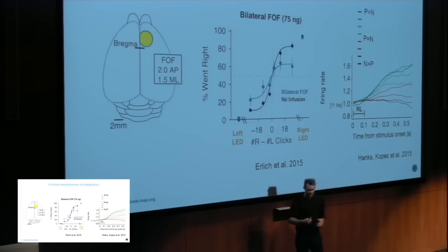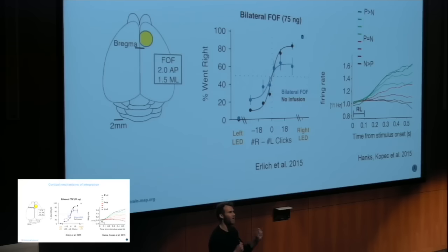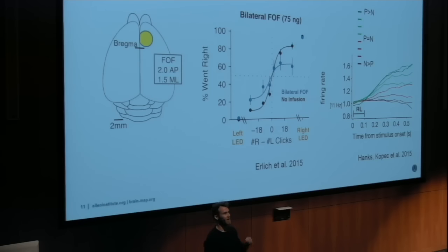We're left with a pretty interesting scenario: neural activity in FOF is necessary for integration, and neurons in FOF are tracking and integrating these clicks across the population. The real question we want to address is: what is the mechanism? How exactly are they doing this? Somehow the nervous system has a way of propagating early sensory information into the future and combining it with new sensory information to make a decision.